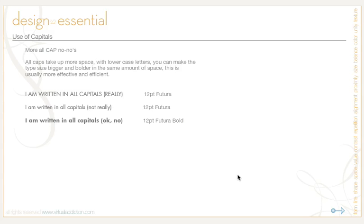All caps take up more space than lowercase letters. With lowercase, you can make the type size bigger and bolder in the same amount of space, which is usually much more effective and efficient. These examples are all set at 12 point Futura. The all-caps version says 'I am written in all capitals, really.' The lowercase version says 'I am written in all capitals, not really' — and even with one more word, it still takes up less horizontal space.